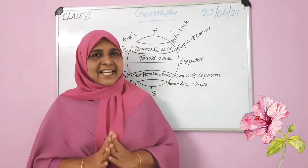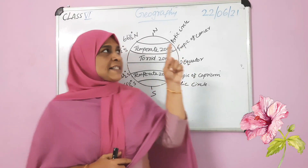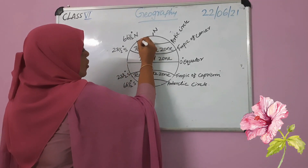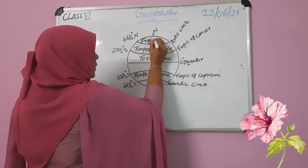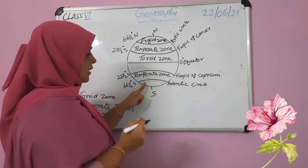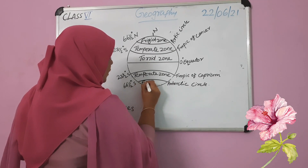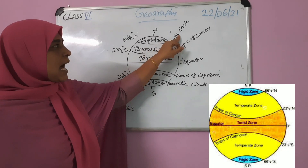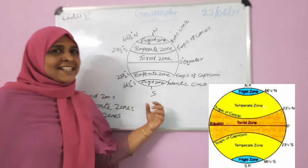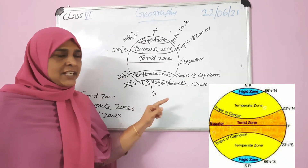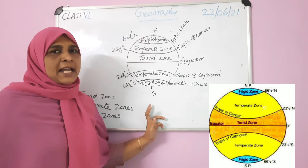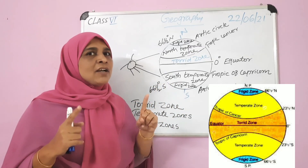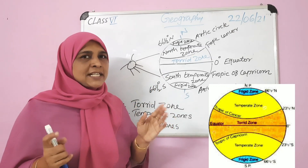There are two frigid zones in the world. First one: north frigid zone. Second one: south frigid zone. The north frigid zone lies in between the Arctic Circle and the North Pole. The south frigid zone lies in between the Antarctic Circle and the South Pole. These areas receive extremely slanting rays of the sun, which is why they are extremely cold.